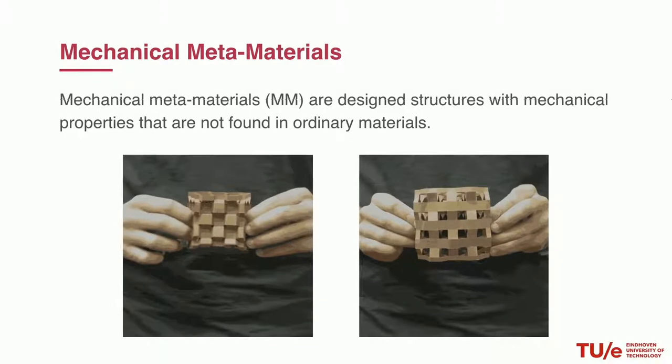So let's first try to describe what mechanical metamaterials are. Mechanical metamaterials are designed structures with mechanical properties that are not found in ordinary materials. Their mechanical properties can be designed to have values that are not found in nature. For example, auxetic materials can have a negative Poisson ratio, meaning that such materials can contract transversely when they are compressed longitudinally. The figure illustrates such auxetic structure created by means of kirigami.